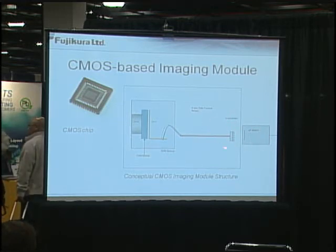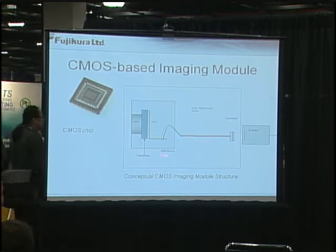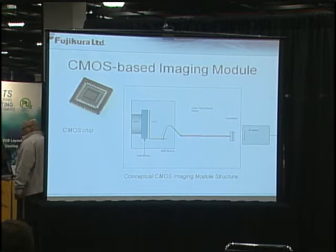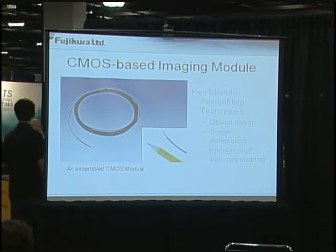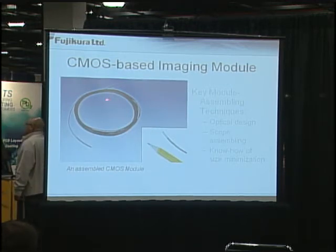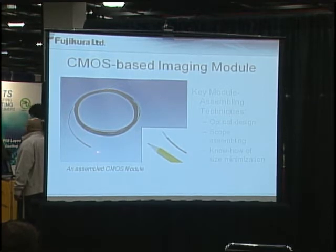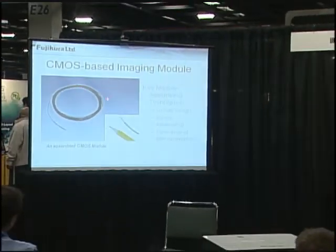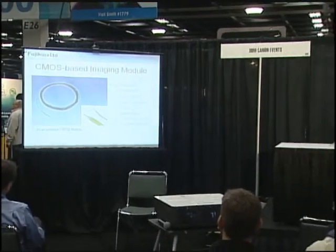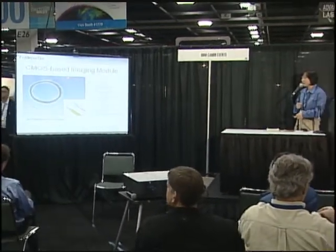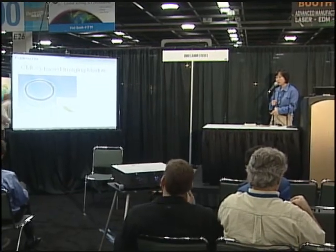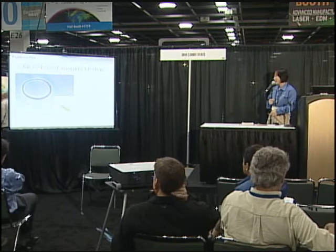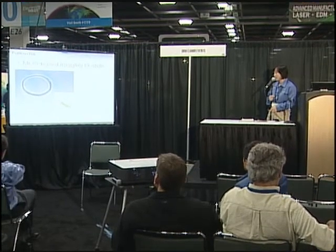The next slide gives you an actual picture of the CMOS module, which is also the example I passed around. This is a distal tip with the optical lens. These are the electric wires — coaxial cables — which can run up to four meters long. On the back end, you may have a connector, which allows you to connect it to an interface board. This is the size comparison to a pencil tip.